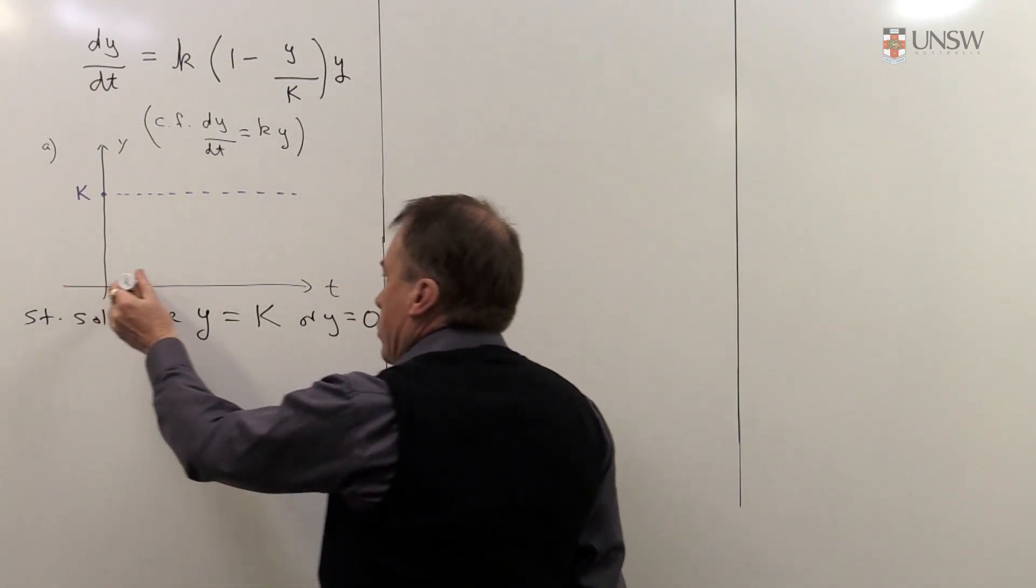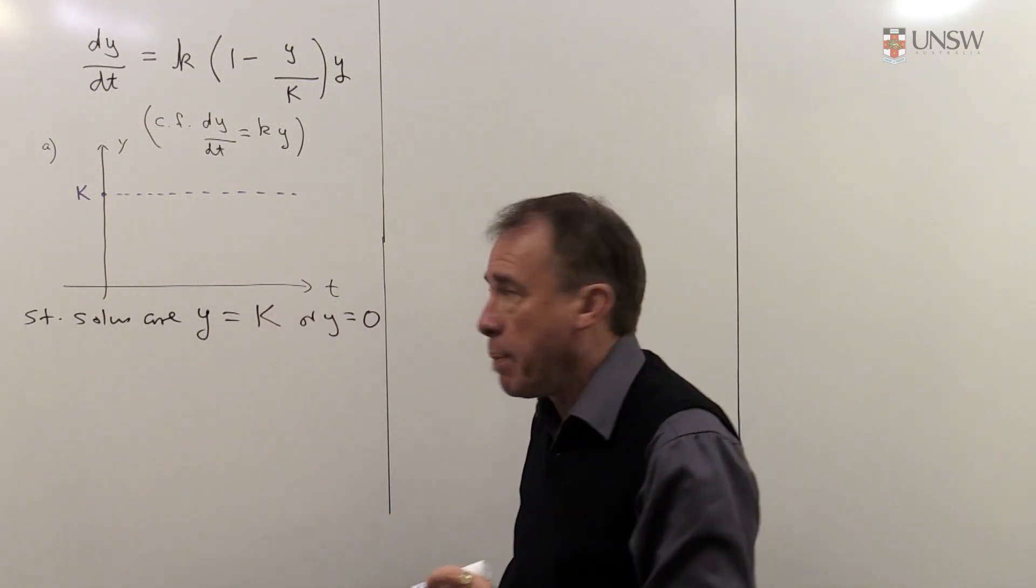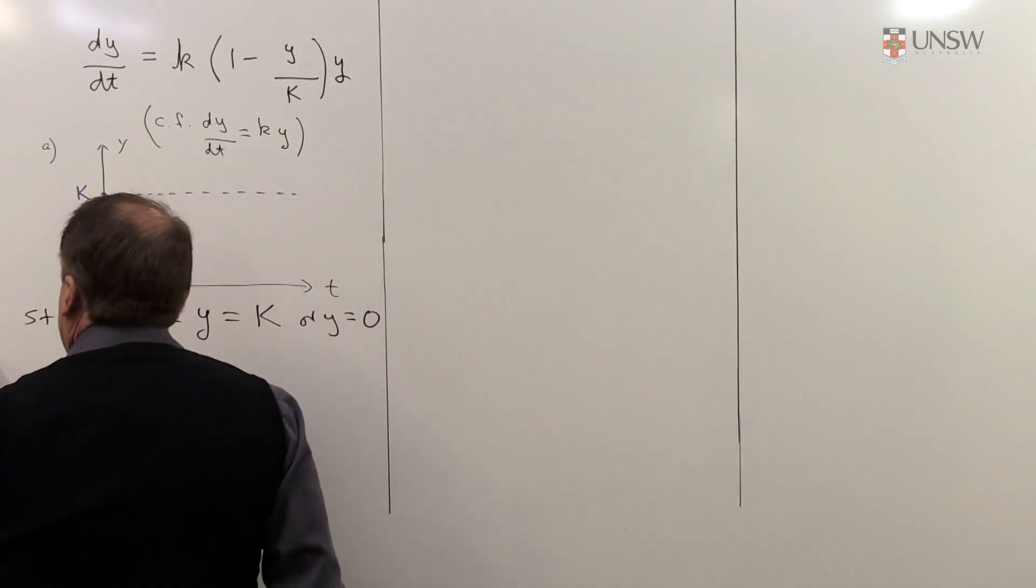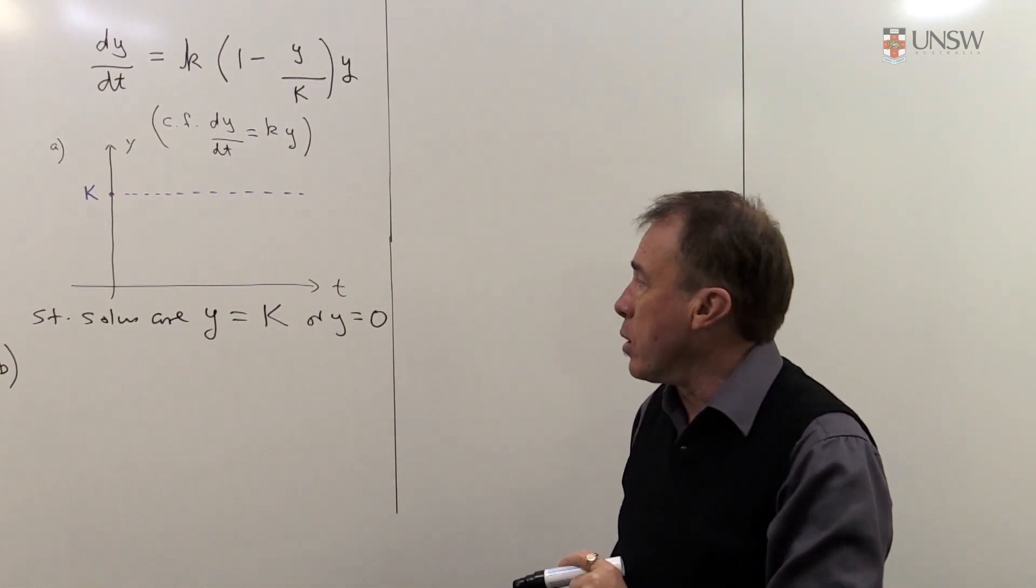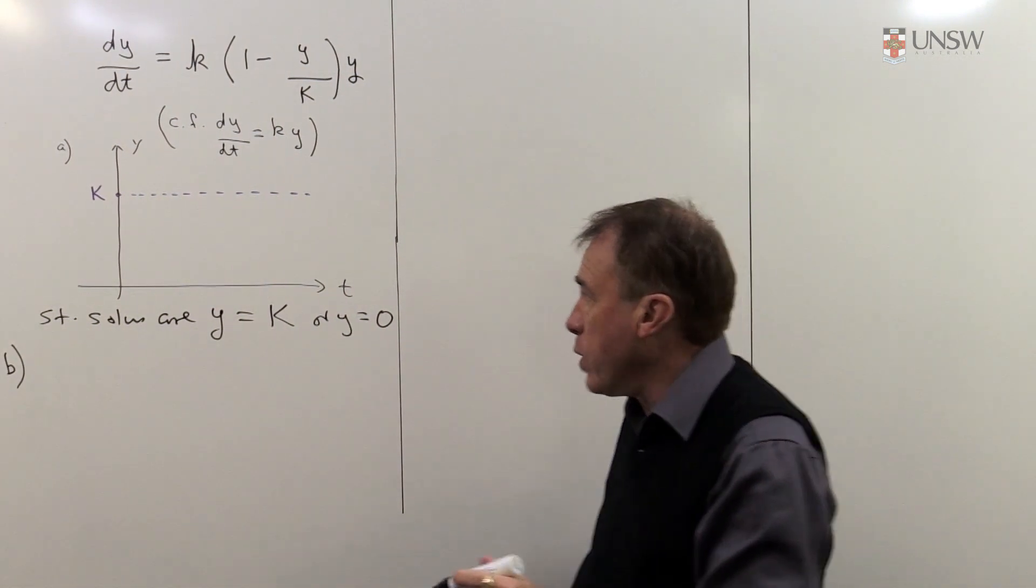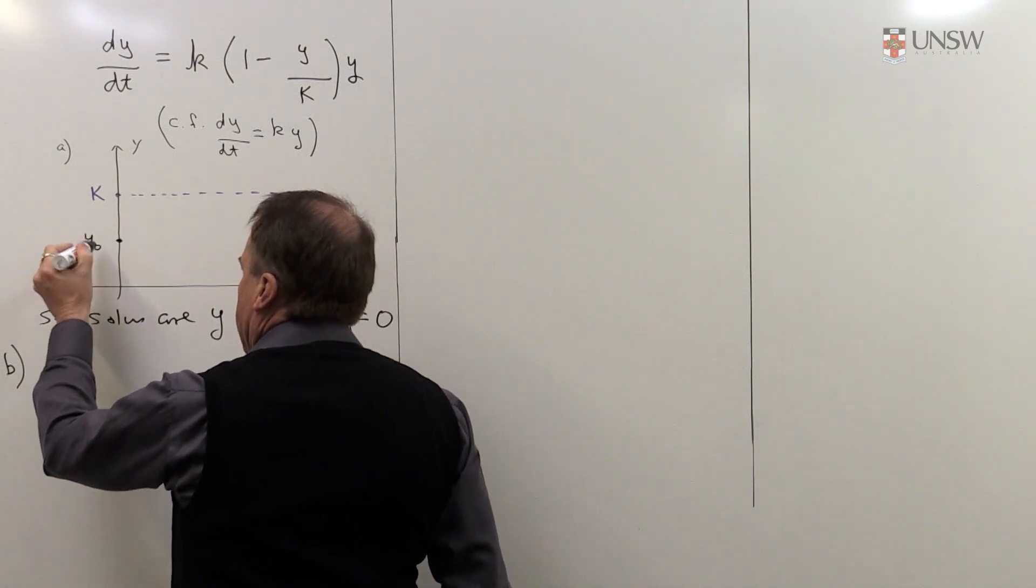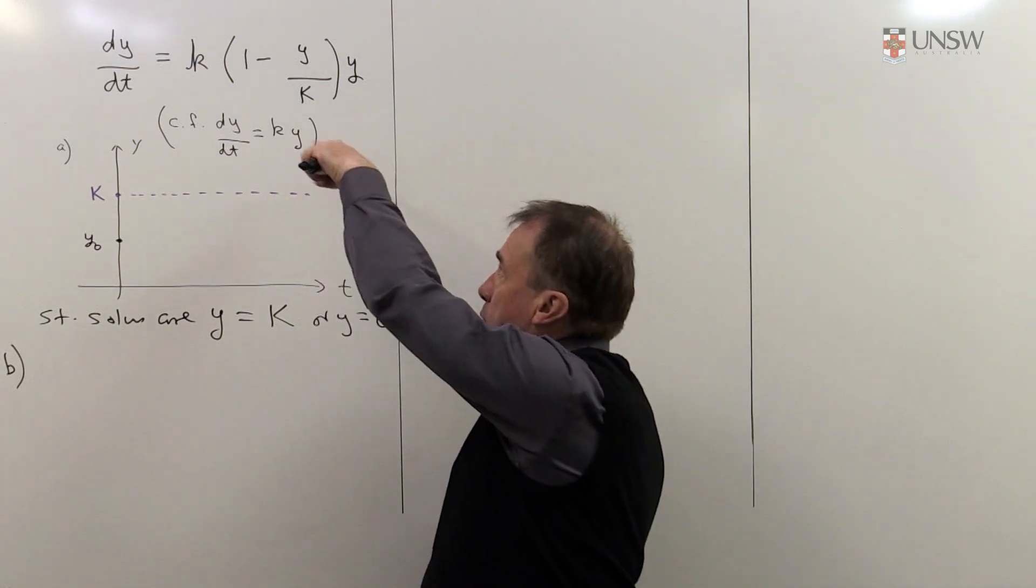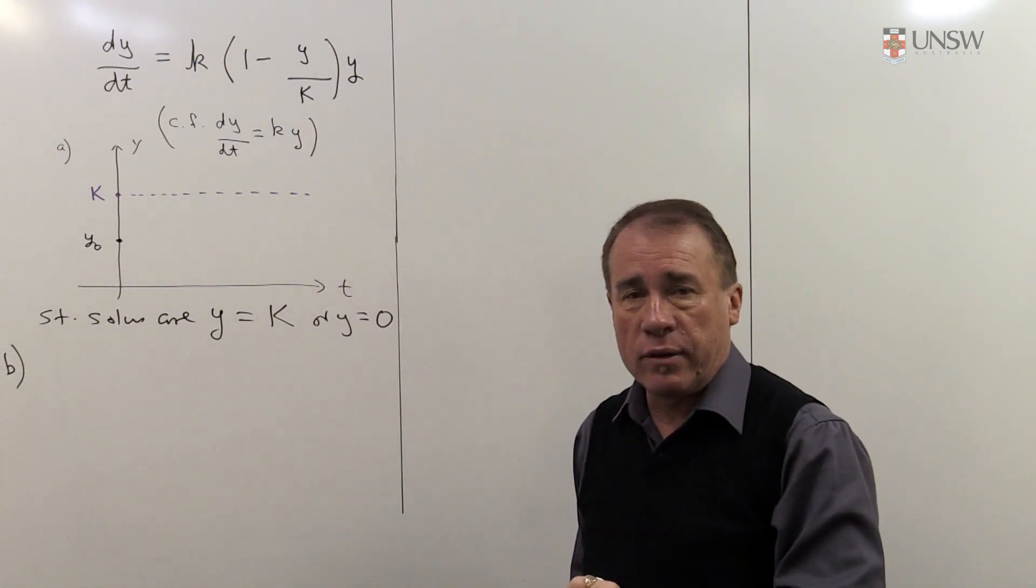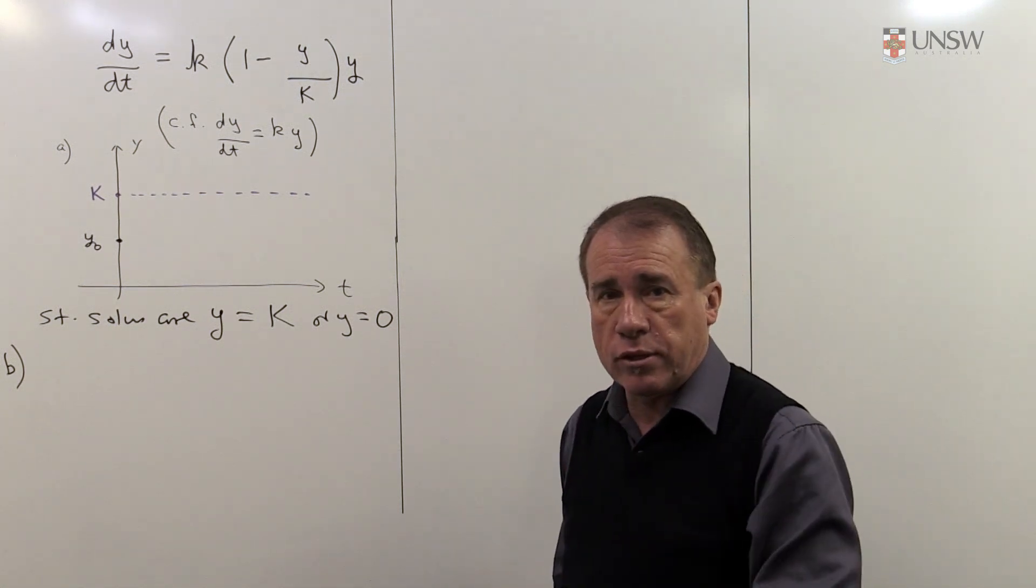So that's going to correspond to y being zero here or y being K up here. Well, they're not necessarily particularly interesting solutions. We'd like to see what happens for other possible starting values. So if we now start off with a value of y nought, which is somewhere in between zero and K, we now like to solve this differential equation and find a formula for y and then see what it's doing graphically.